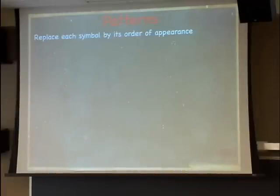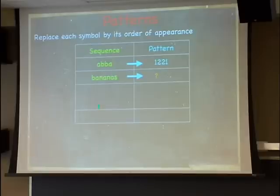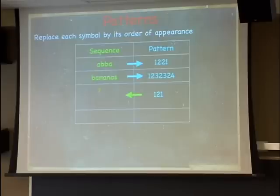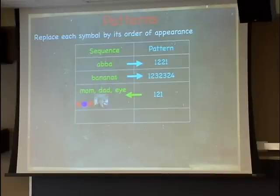Patterns replace each symbol by its order of appearance. A small quiz: if we see ABBA, the pattern is 1, 2, 2, 1. For 'bananas,' the pattern is 1, 2, 3, 2, 3, 2, 4. In Jeopardy style, give a word with pattern 1, 2, 1 — answers include 'mom,' 'dad,' or 'wow.' Even sequences of colors work: red, blue, red has pattern 1, 2, 1. Notably, French mathematicians Vallée, Flageolet, Vallée also have pattern 1, 2, 1.